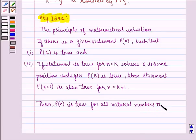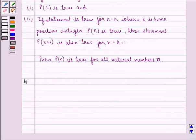Using these two properties, we will show that the statement is true for n equal to 1, then assume it is true for n equal to k, then we prove it is also true for n equal to k plus 1, hence proving that it is true for all n belonging to natural numbers. Now we start with the solution to this question.